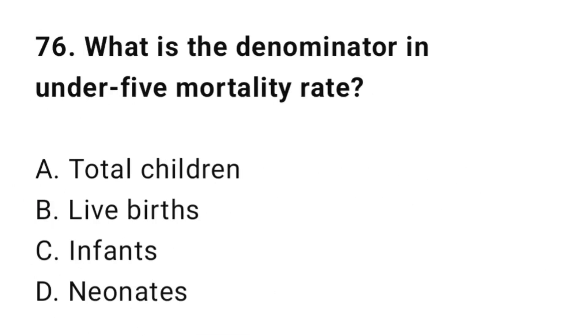Question number seventy-six: What is the denominator in under-5 mortality rate? The correct option is B: Live births.